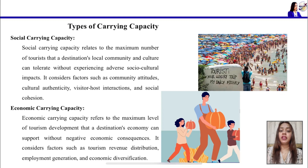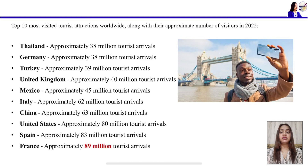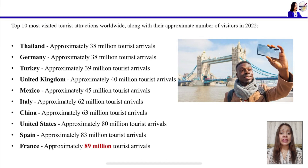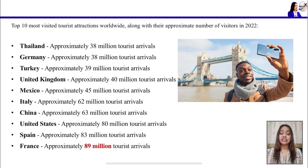These are the four main types of carrying capacity. Here are the top 10 most visited countries in the world as per 2022 data: Thailand at 10th rank with 38 million tourist arrivals, Germany at 9th, Turkey with 39 million, United Kingdom with 40 million, Mexico with 45 million, Italy with 62 million, China with 63 million, USA with 80 million, Spain with 83 million, and France at the top with 89 million tourist arrivals.